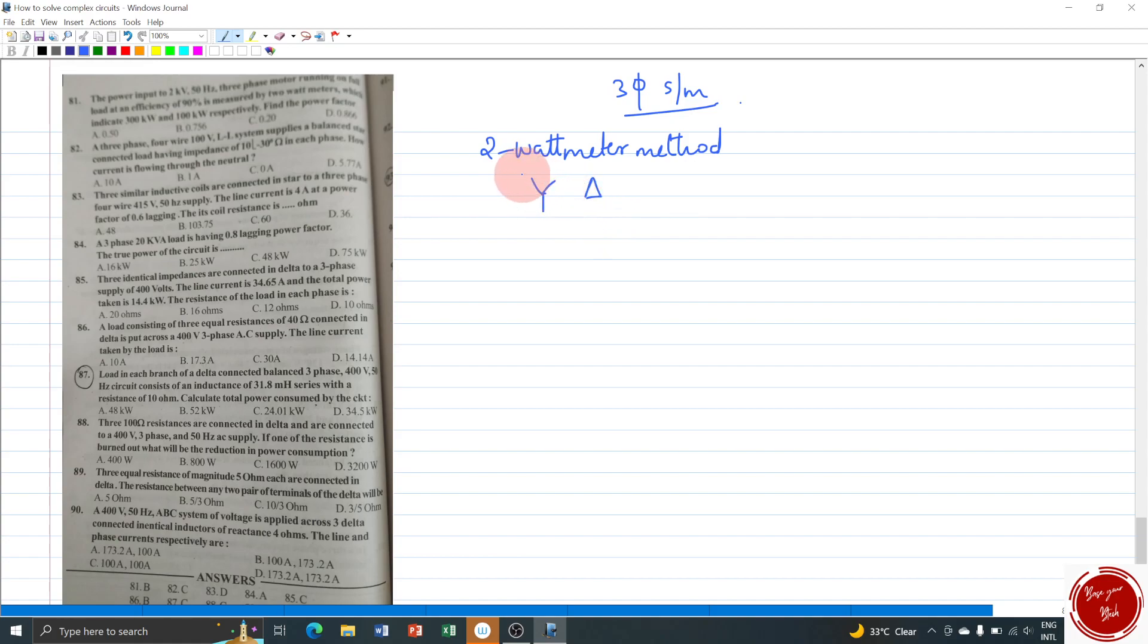Impedance triangle, etc. Anyway, 2 wattmeter method you will have one equation to remember: tan phi where phi is the angular separation of voltage and current is equal to root 3 times W1 minus W2 divided by W1 plus W2. W1 is the highest reading among the 2 wattmeters and W2 is the lowest reading.